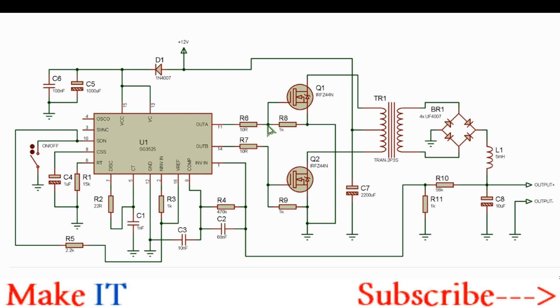This resistor across the gate and source is a gate source discharge resistor which ensures that the MOSFET remains turned off when not being driven. On this other side you have the same. The gate drive resistance is about 10 ohms.